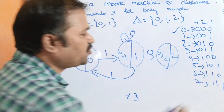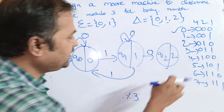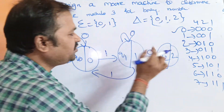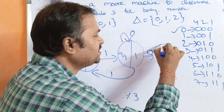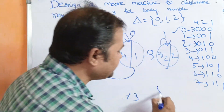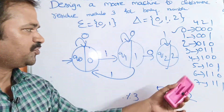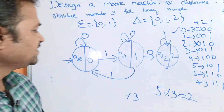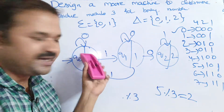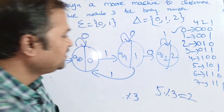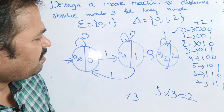For 5 (binary 101), the sequence 1,0,1 brings us to Q2 — confirmed since 5 modulo 3 is 2, which is the output of Q2. For 6 (binary 110): 6 modulo 3 equals 0, so we end up at Q0. The sequence 1,1,0 transitions us back to Q0. Let's now check whether we have applied all combinations — 0 and 1 — to every state.